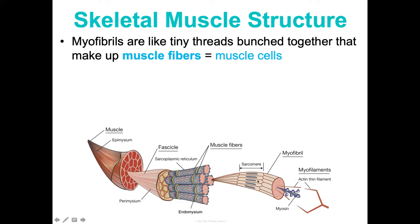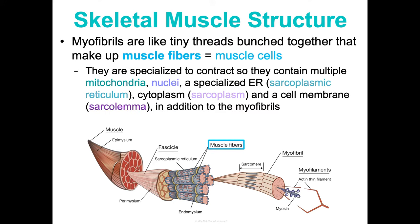Myofibrils are tiny thread-like organelles that get bunched together to form a muscle fiber, which is essentially the muscle cell. Muscle cells are specialized for contraction, so they need multiple mitochondria for lots of energy, nuclei, a specialized endoplasmic reticulum called the sarcoplasmic reticulum, cytoplasm called sarcoplasm, and a cell membrane called the sarcolemma. 80% of a muscle cell consists of myofibrils — all other organelles are squeezed around them. These are really large oval cells, up to 10 times larger than the average body cell.